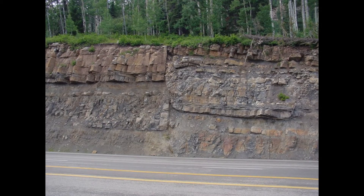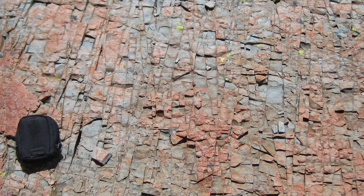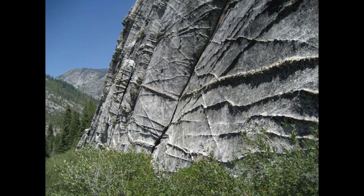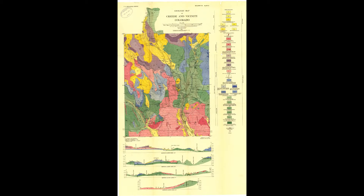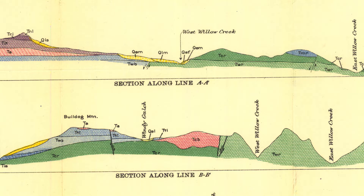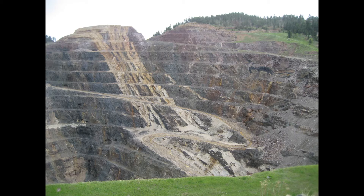Structural features such as faults, joints, fold limbs, conjugate fractures, veins, and deformation bands are also planar features that can be measured in the field. Why is it important to measure the orientation of planar features? These measurements provide discrete, mappable, three-dimensional data that can help us unravel past geologic processes, find natural resources, or better understand natural hazards.